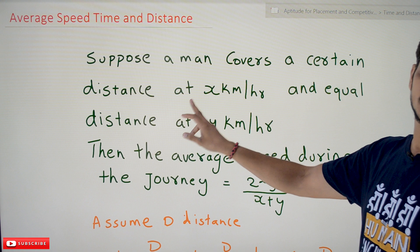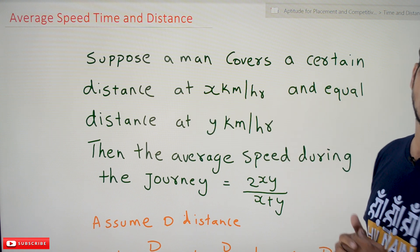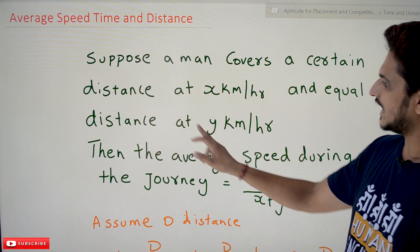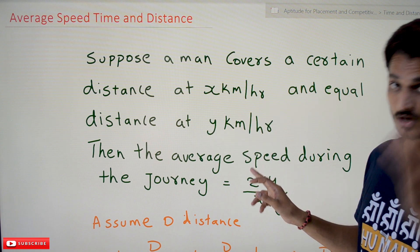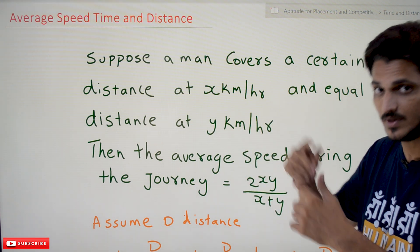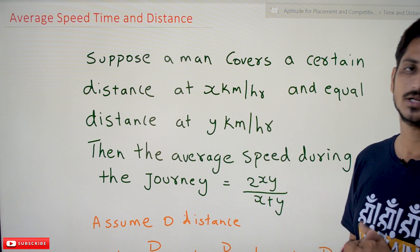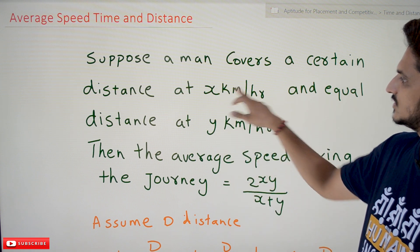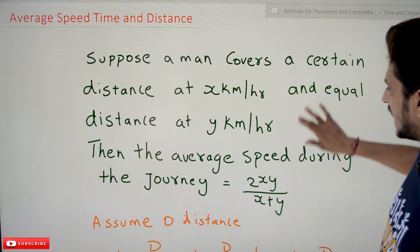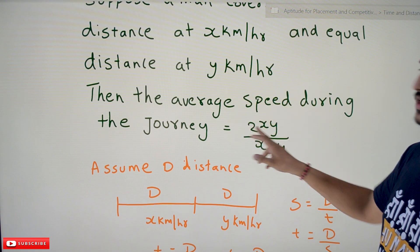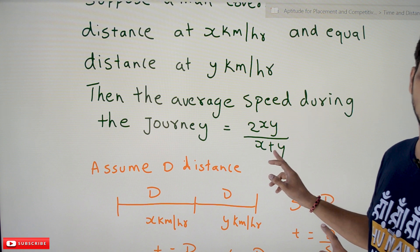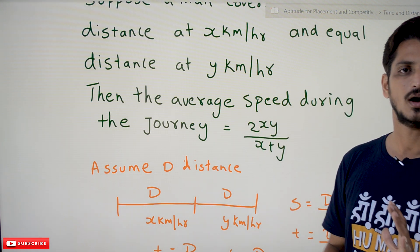Coming to today's class: the first formula — suppose a man covers a certain distance at x kilometers per hour and an equal distance at y kilometers per hour. Remember: equal distance. He traveled the same distance at y kilometers per hour. Given speeds x km/h and y km/h, the average speed during the journey is given as 2xy divided by x plus y.